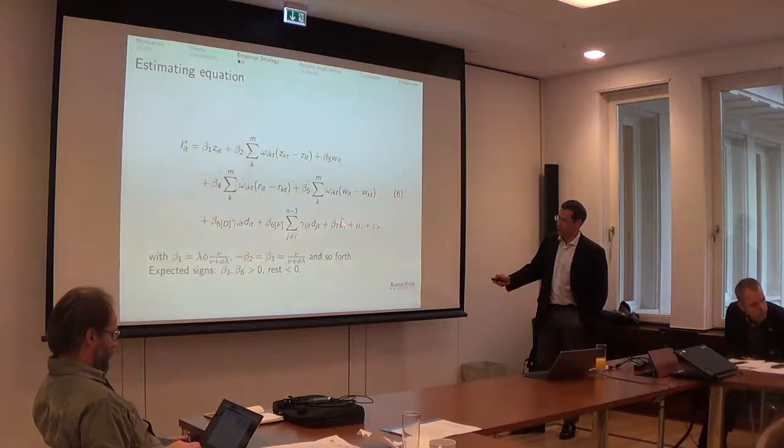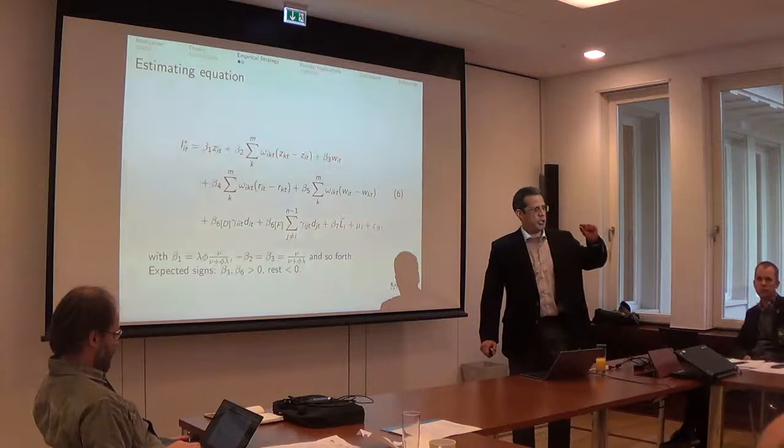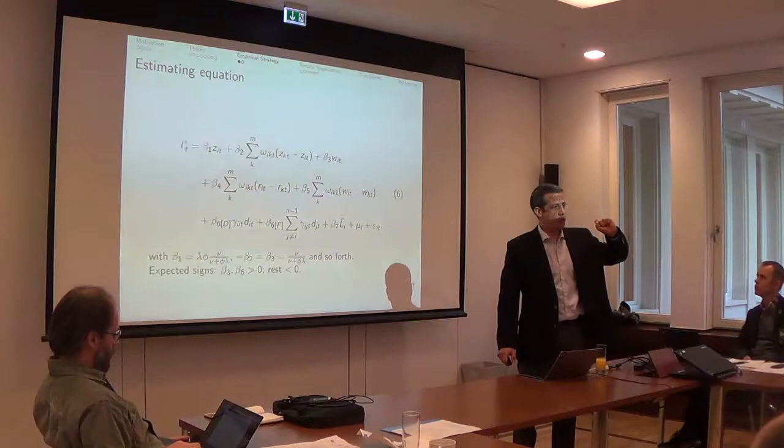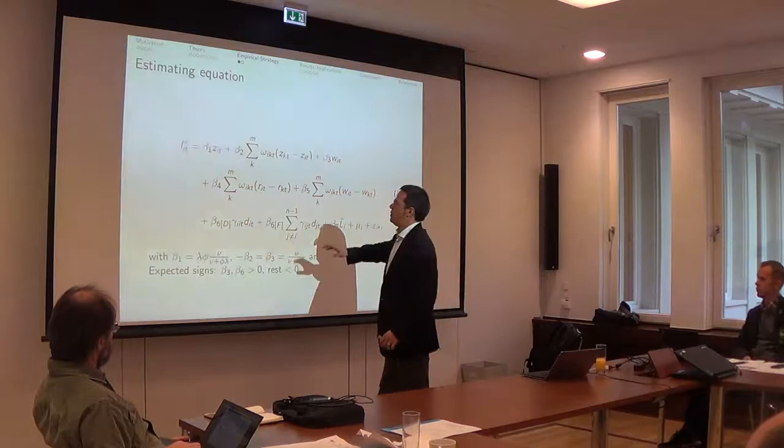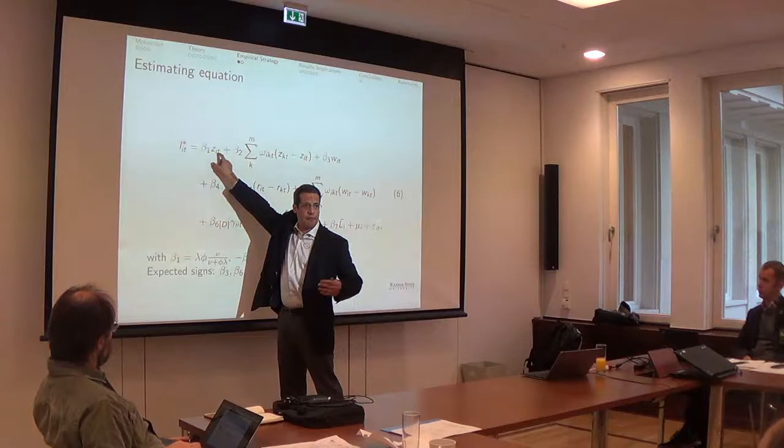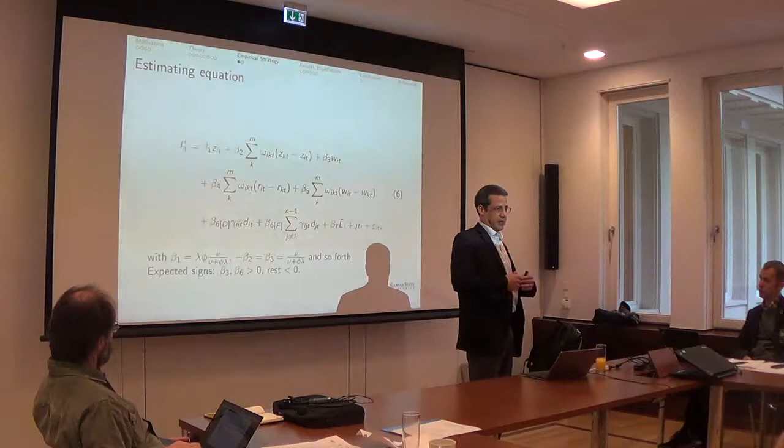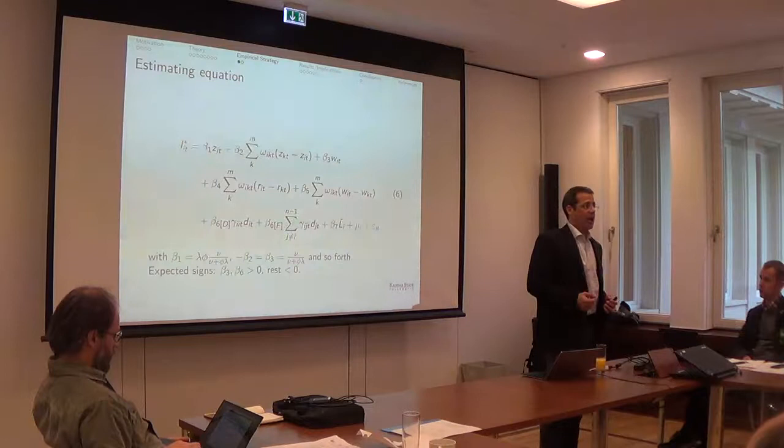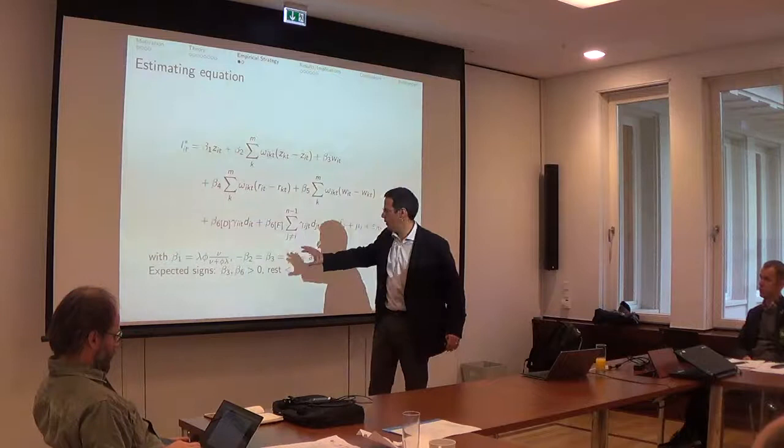And then the only variable that is not coming from the theory is this variable here, that is basically how much of the total area suitable for agriculture in a country was under cropland at a given point. And the idea here is that you may have some simultaneity between a country's TFP growth and its land use change. If, for example, a country is very limited in terms of land, they invest a lot in research and development, and they have high rates of TFP growth, yet they don't use a lot of land. So this is what we try to control here for.